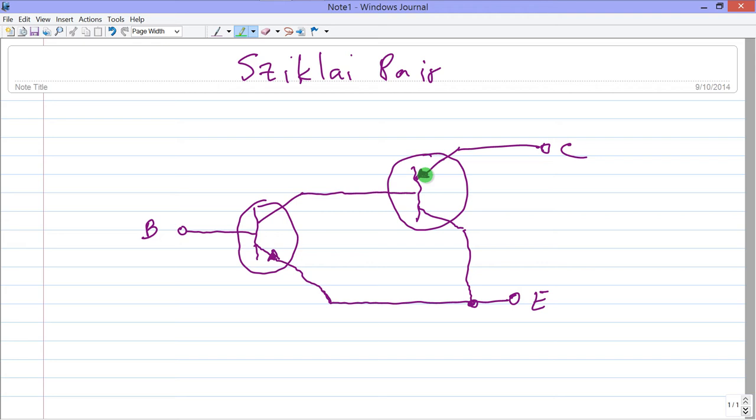Remember that in semiconductor devices, these arrows indicate that electrons can always flow easily against them, but not so easily, or sometimes not at all, in the direction that they point. So a minus to plus current will flow against these arrows.